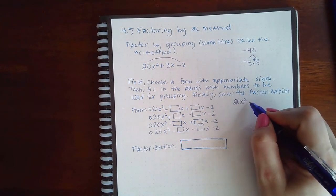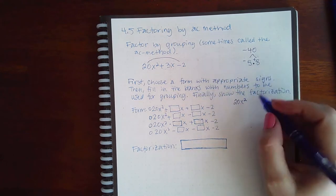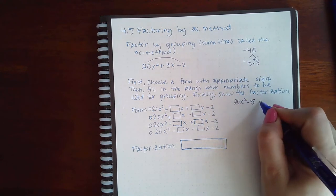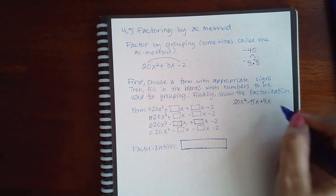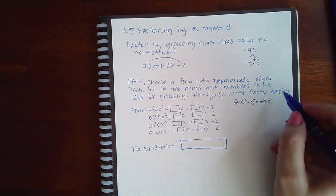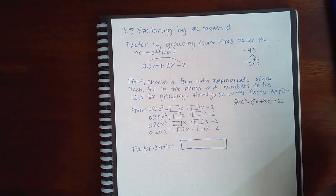Instead of plus 3x, I'm going to use minus 5x and positive 8x, but I need to keep the same variable that that 3x had, and then finally the last term minus 2.